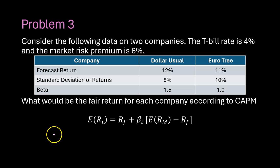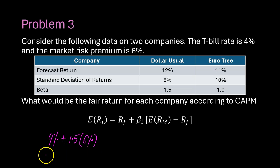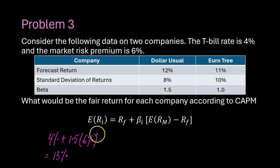With that, it's straightforward to figure out the fair or expected rate of return for each company according to CAPM. For Dollar Usual, the risk-free rate is 4%, and the beta is 1.5, which we multiply by the risk premium of 6%. So 1.5 times 6% is 9%, plus 4% gives an expected return of 13% for Dollar Usual. If analysts are forecasting 12%, CAPM would say that shouldn't be — the fair rate of return is 13%.